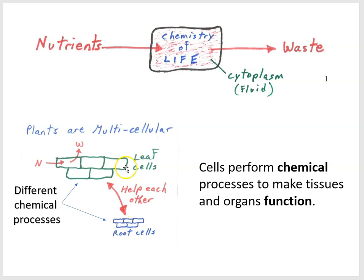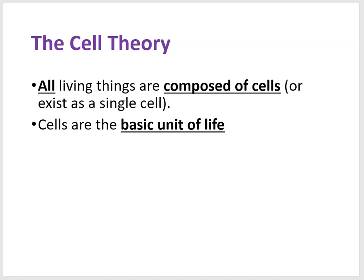Leaf cells and root cells are all part of the plant and help each other survive, but they are different precisely because different chemistry is going on inside them. For example, leaf cells have structures called chloroplasts where photosynthesis occurs — a process not happening in root cells. This leads us to add a second pillar: cells are the basic unit of life.